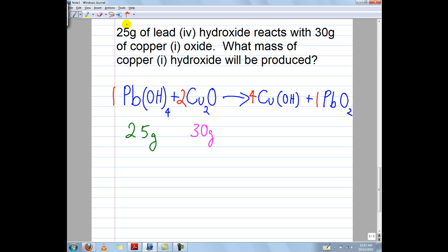At this point, I like to start writing down the numbers, my givens, from the question into my equation. I'm given 25 grams of lead 4 hydroxide, and that reacts with 30 grams of copper 1 oxide. Before we continue, let me take a little detour.